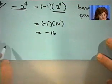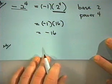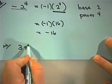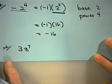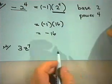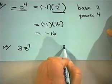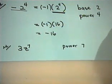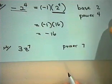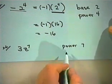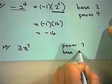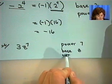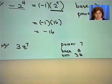Another example of an exponential, one involving a variable, would be 3 times z to the 7th power. In this case, our power or exponent is 7, and that's fairly straightforward—you look for the superscript and that's it. Our base, however, is z. It is not 3z. Again, the 3 is not in parentheses.